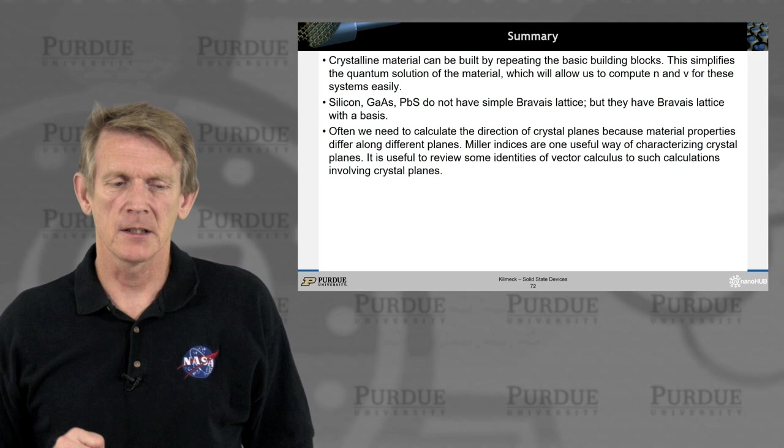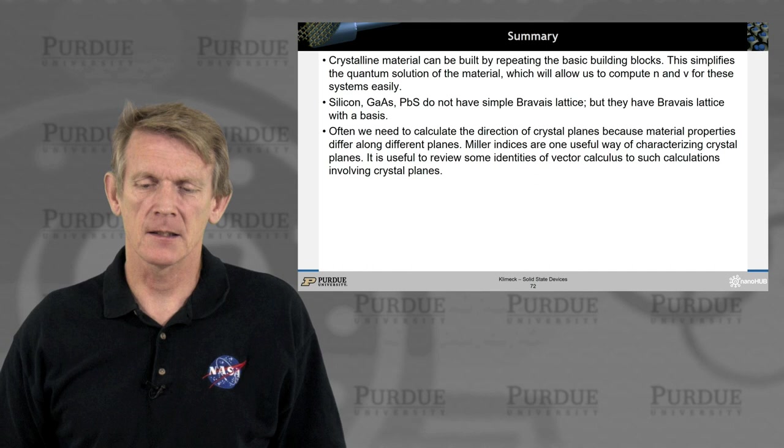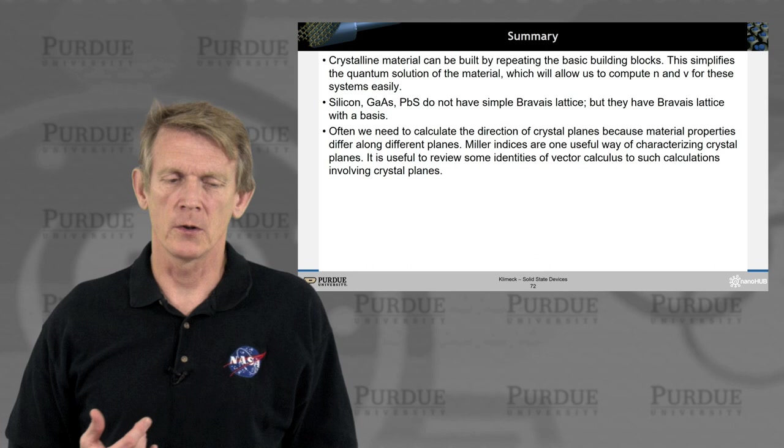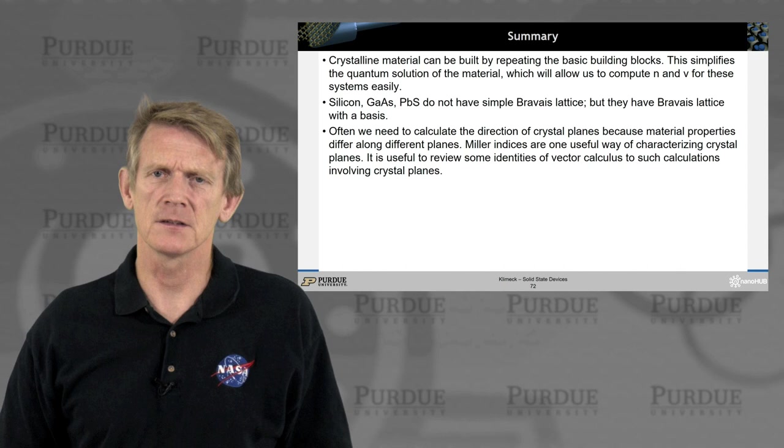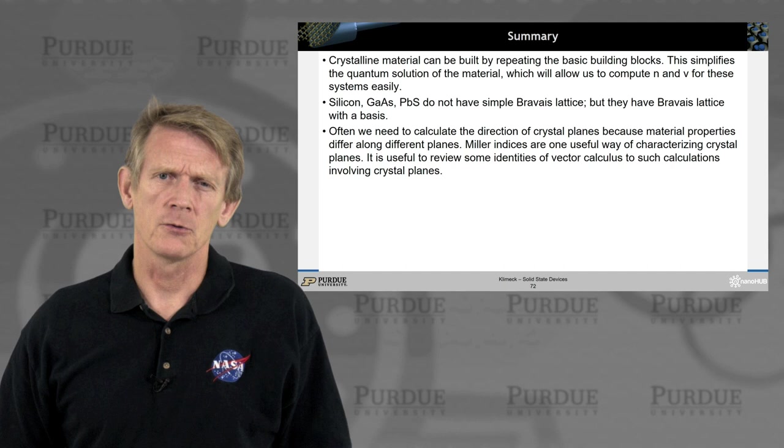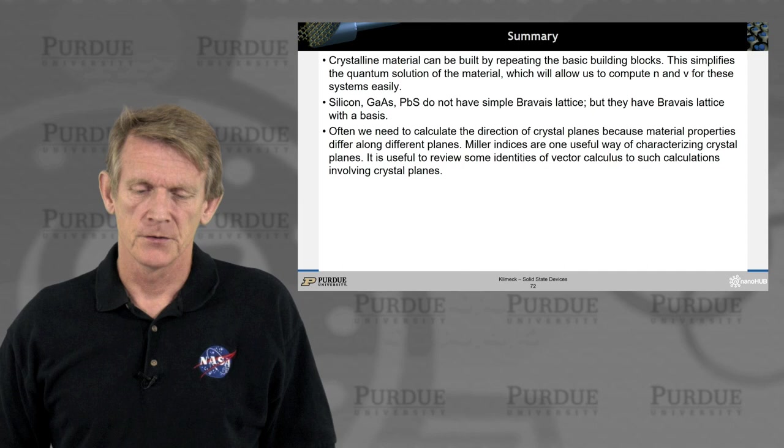So these crystalline materials make the basic building blocks. And within these building blocks we can do some quantum mechanical calculations that allow us to calculate the charge density and the velocities of these systems. And we highlighted some of the important materials like silicon gallium arsenide. They are not simple Bravais lattices, but they are Bravais lattices with a basis. So they are more complex than the most simple space group representations in the Bravais lattice. And we calculated some crystal planes and directions that are basically vector algebra applied to crystal directions. So with that, that concludes the sections on crystals. And thank you very much.